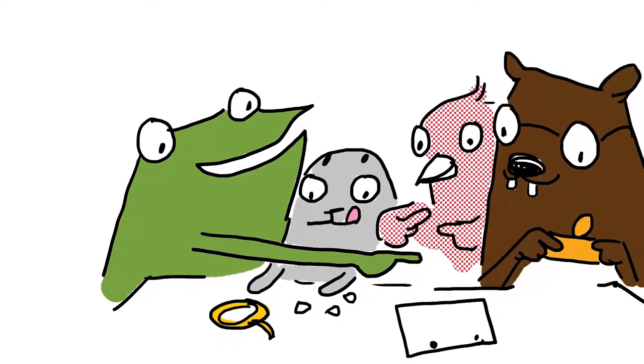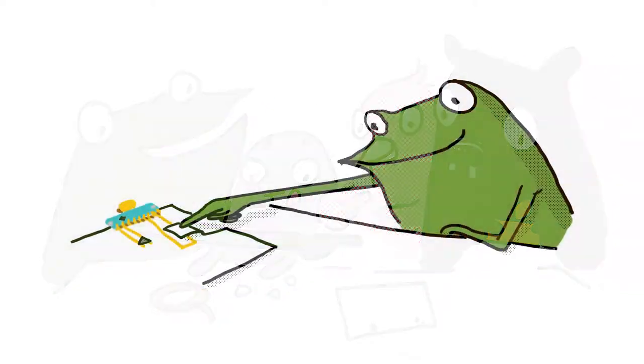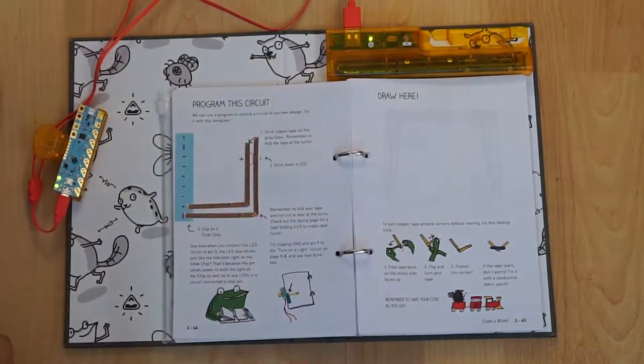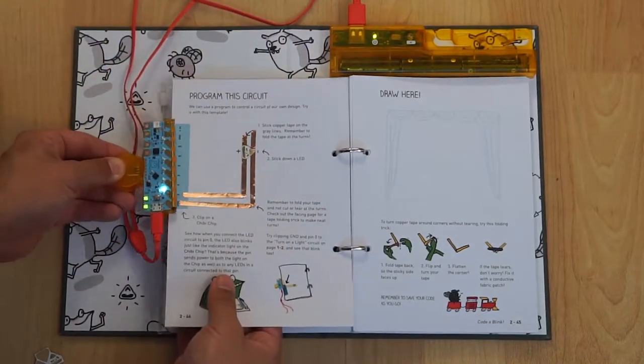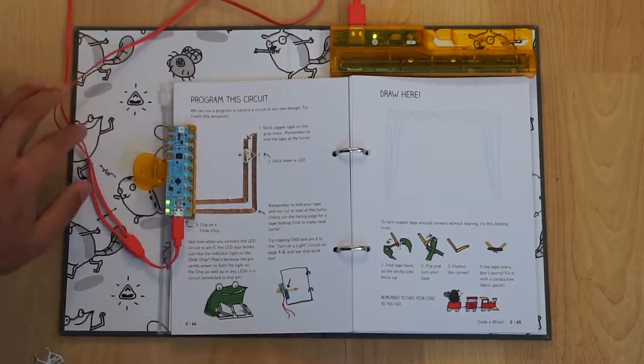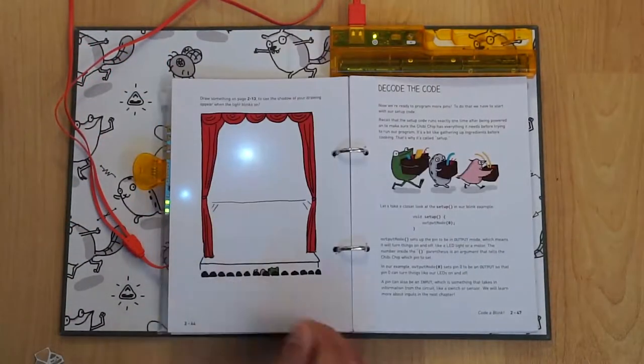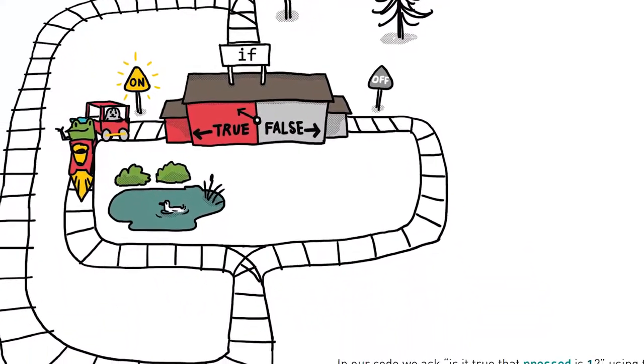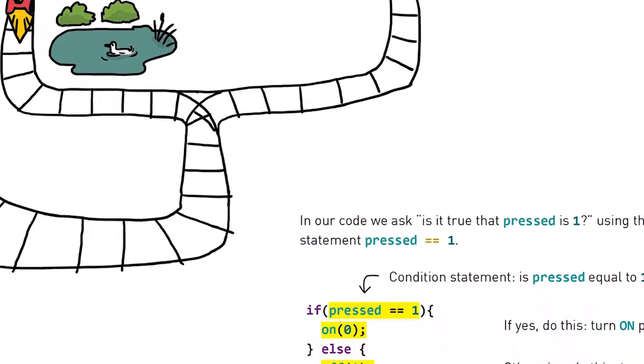As you go through the book with Fern and friends, you'll learn all sorts of cool stuff like how to build a paper switch and blink an LED. You'll also learn cool programming concepts like if statements and loops and even multithreading.